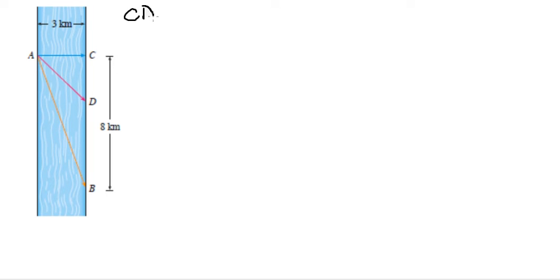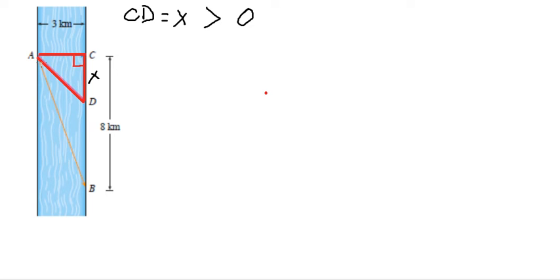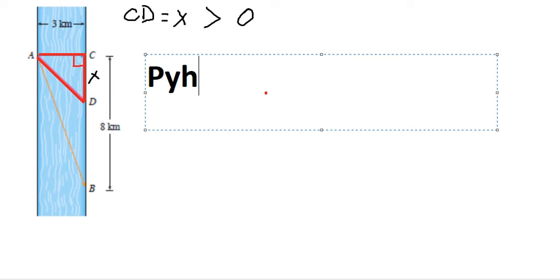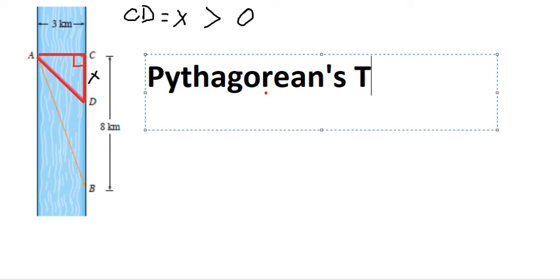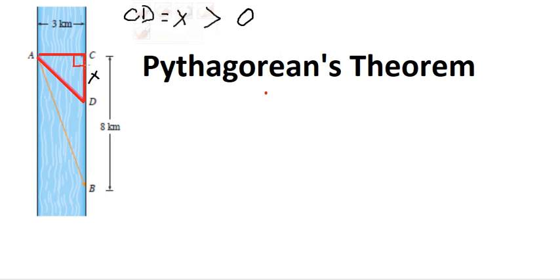I will let CD equal to S, where S is a positive number. Now let's consider AC, CD, and AD. We can see this is a right triangle, so we want to find the length of AD. We can use the Pythagorean theorem: AC squared plus CD squared equals AD squared.